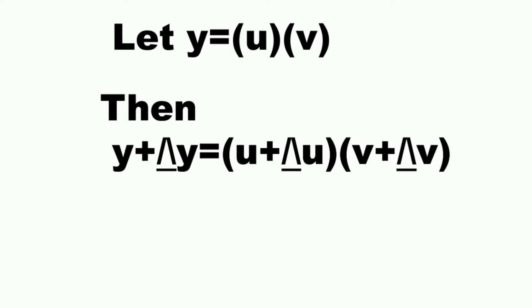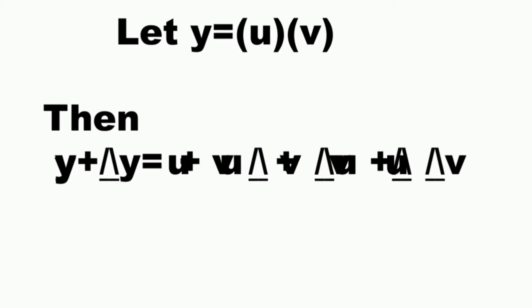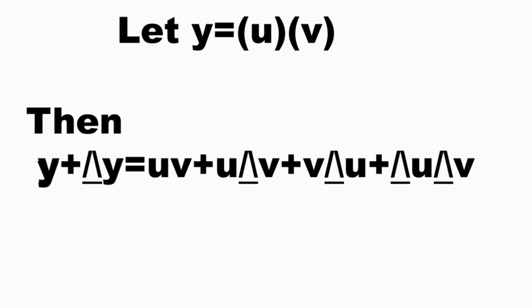To multiply we are going to use FOIL: u times v, plus u times delta v, plus v times delta u, plus delta u times delta v.